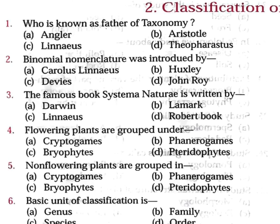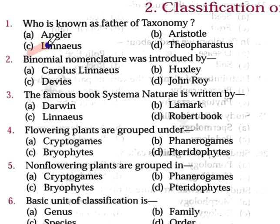Question number 1: Who is known as the father of taxonomy? Option A: Angler. Option B: Aristotle. Option C: Linnaeus. Option D: Theophrastus. The correct answer is Carl Linnaeus. Carl Linnaeus is called the father of taxonomy because he named organisms, gave them rankings, and classified them. That is why he is called the father of taxonomy.